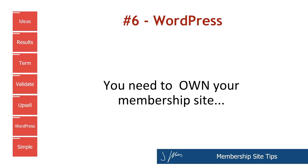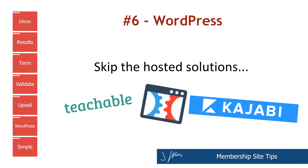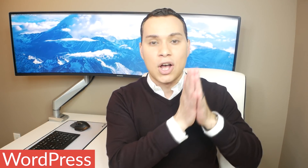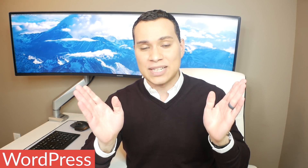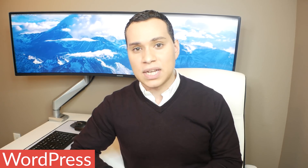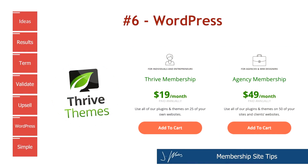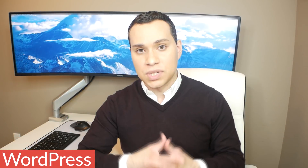Tip number six is to use WordPress to build your membership site. There are a lot of fancy softwares out there like ClickFunnels, Kajabi, and Teachable that allow you to put together membership sites on their servers. But it's very important that your membership site is on WordPress, on your own server, because it's going to be what's keeping the lights on — and you don't want that on some other company's server you have no control over. I highly recommend using Thrive Apprentice — no affiliate link in the description — you can check them out at thrivethemes.com. They have a great plugin that makes it very easy to put together any type of membership website using WordPress.